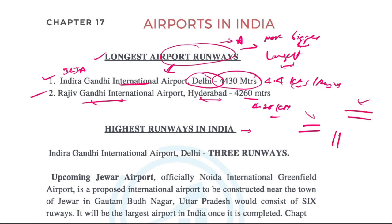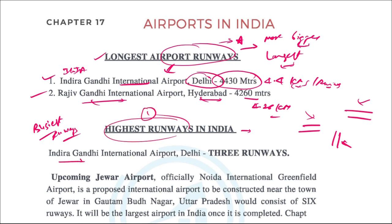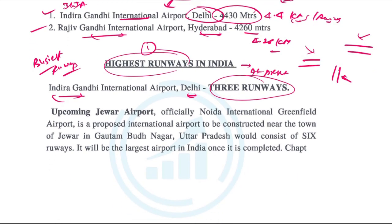The more runways an airport has, the more aircraft can land parallelly or longitudinally. So the busiest airports have more than one runway. In India, Indira Gandhi International Airport in Delhi has the highest number of runways — three runways at present. It is the only airport with three runways because passenger movement and aircraft movement are both very high there.